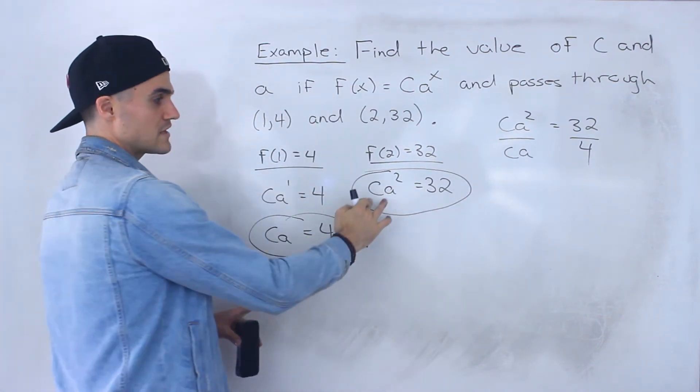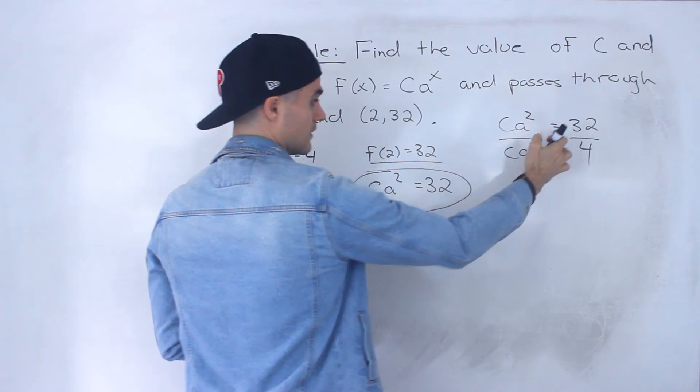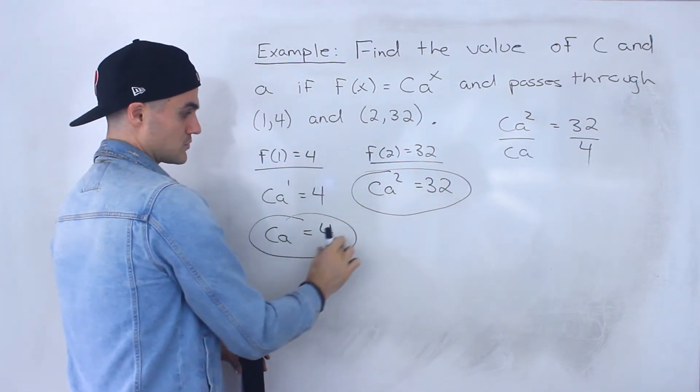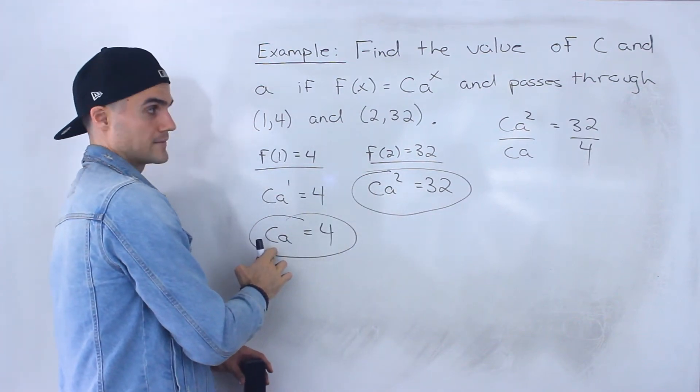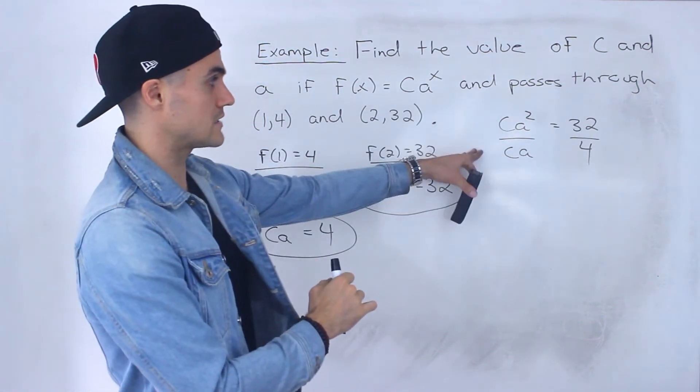Right? So one more time, if this is equal to that, and this is equal to that, if we take 32 and divide it by 4, then that's the same as taking this and dividing it by that. Right? So that's what I did here.